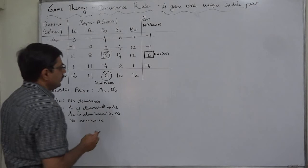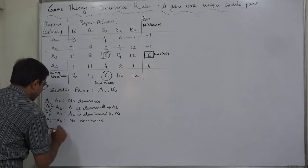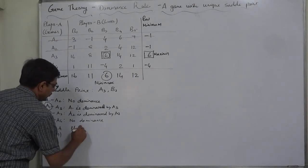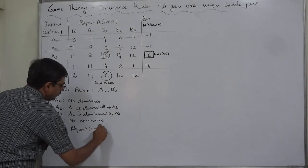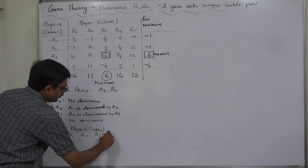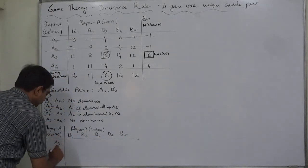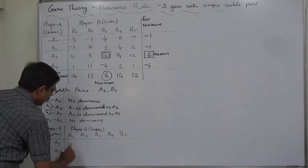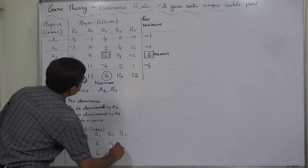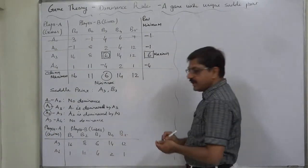Let's form the new game. Player A is the gainer, Player B is the loser. All five strategies of B remain: B1, B2, B3, B4, B5. But now only two strategies of A: A3 and A4. The payoff values are: 16, 1, 8, 11, 6, 4, 14, 2, 12, 1. Now let's compare the strategies of B for dominance.